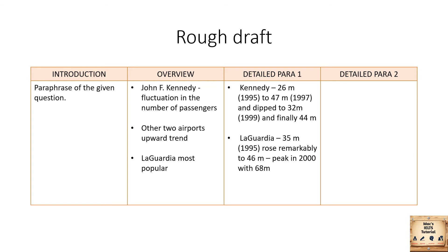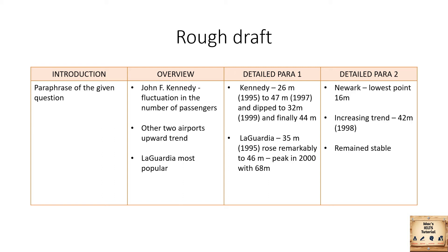Now we shall move on to Detail Paragraph 1. I'm going to emphasize the data mentioned in the earlier paragraph, along with statistical data and key points: Kennedy Airport started with 26 million passengers in 1995, which increased to 47 million in 1997, dipped to 32 million in 1999, and finally ended up with 44 million. LaGuardia had 35 million in 1995, which rose to 46 million and had a peak of 68 million in 2000.